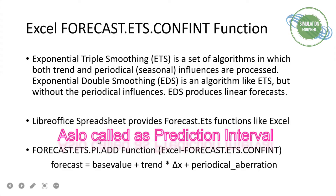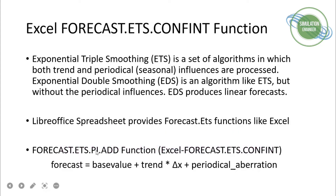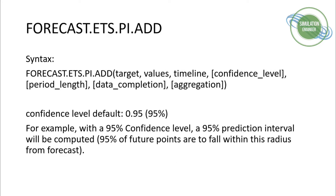To predict the confidence interval, I'm using the function FORECAST.ETS.PI.ADD — where PI stands for Period Interval (equivalent to Confidence Interval in Excel). The ADD variant predicts the additive forecast. The formula calculates: base value plus trend multiplied by delta x (the increment), plus periodic contributions.